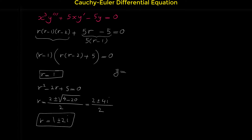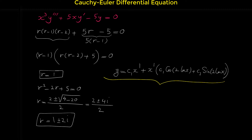The general solution is: c₁x¹ for the real root, plus x¹(c₂cos(2 ln x) + c₃sin(2 ln x)) for the complex roots. This is the general solution for this homogeneous third order Cauchy-Euler differential equation.